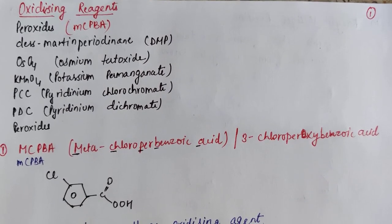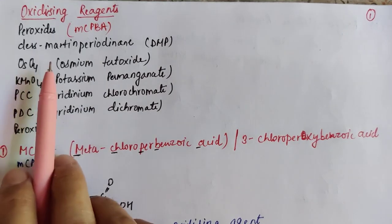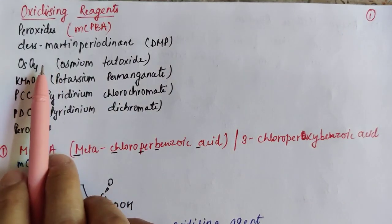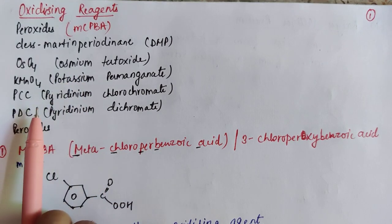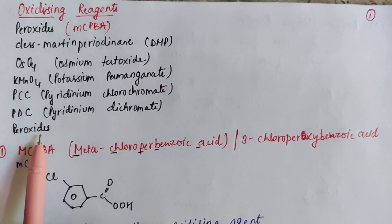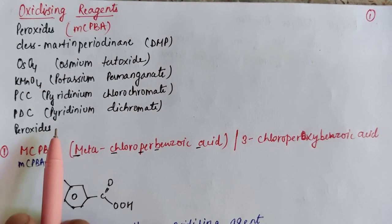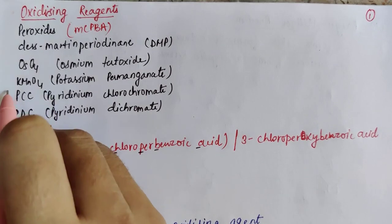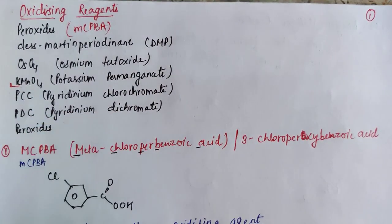Good morning class. Today's class we are going to study about oxidizing reagents. They are mainly peroxides, DMP, osmium tetraoxide, potassium permanganate, PCC, PDC and some other peroxides. I will be discussing these oxidizing reagents in two parts. In the first class we will discuss till potassium permanganate and the remaining will be in the second class.